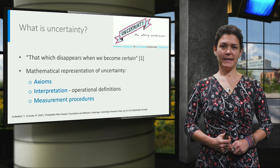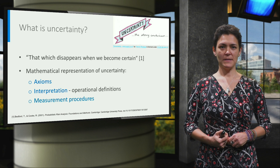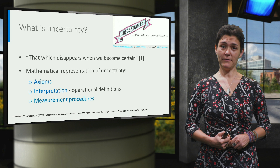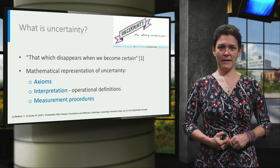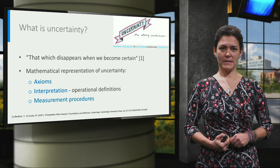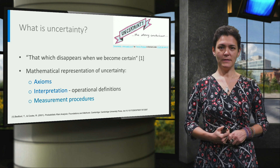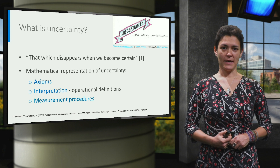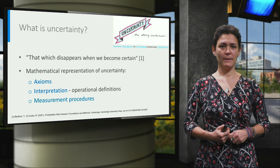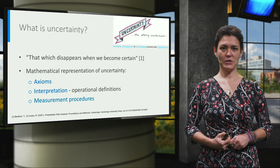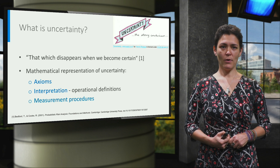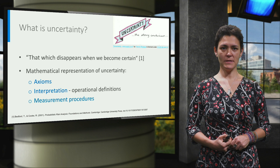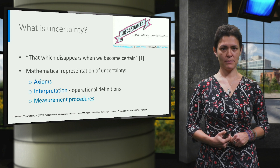Saying that uncertainty is whatever disappears when we become certain is both true and funny, but it is hardly enough for the task we need to undertake, namely quantifying the uncertainty. For such a task, we will employ a mathematical representation of uncertainty, which requires a set of axioms, interpretations, and measurement procedures.